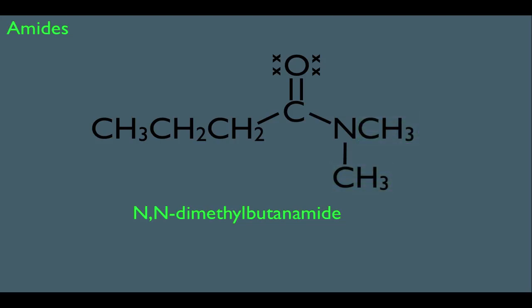But what about if the two alkyl groups were not the same, as in this example right here? To name this molecule, again, we start with the parent name butanamide, and we notice the alkyl groups. In this case, we got a methyl, and we also have an ethyl. We need to place these groups into the name, but remember we should follow alphabetical order.